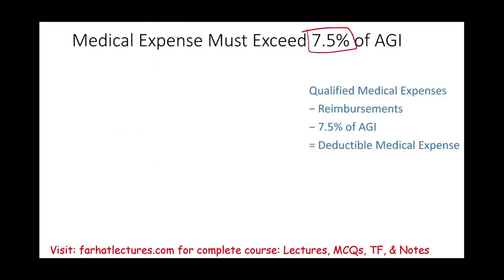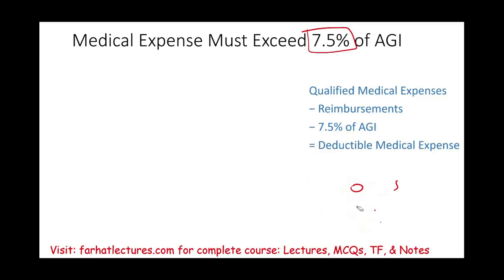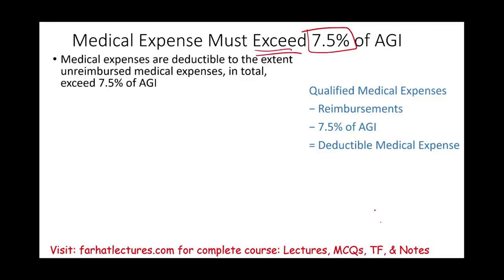Why does this threshold exist? The government has ways to raise taxes beyond simply raising the rate. One approach is to impose thresholds: a deduction is technically allowed but must exceed a certain amount, meaning most people lose the deduction. The government effectively takes away the deduction without explicitly eliminating it, thereby increasing taxes.